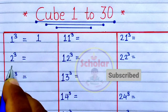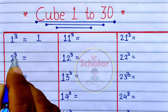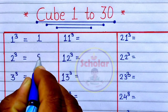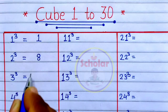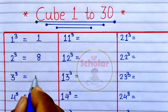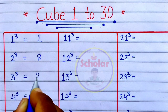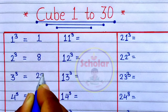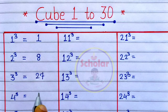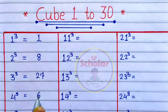Cube of 1 is 1. Cube of 2 is 8. Cube of 3 is 27. Cube of 4 is 64.